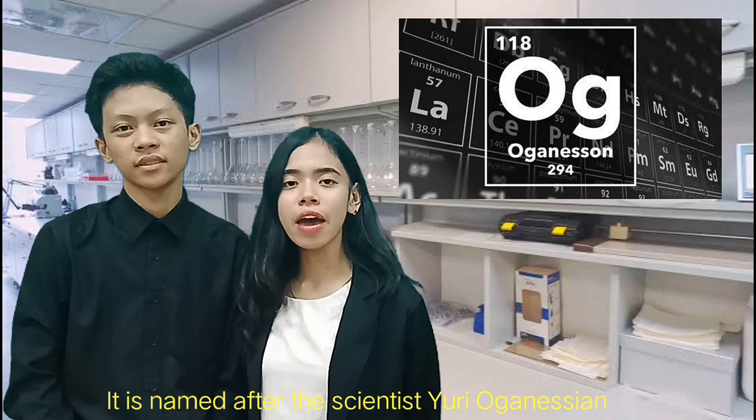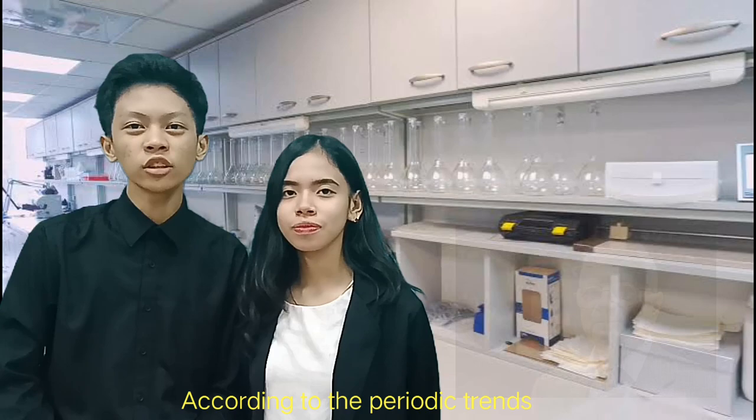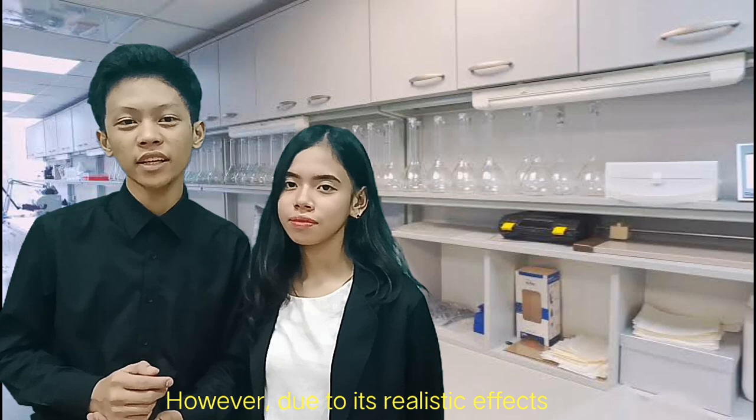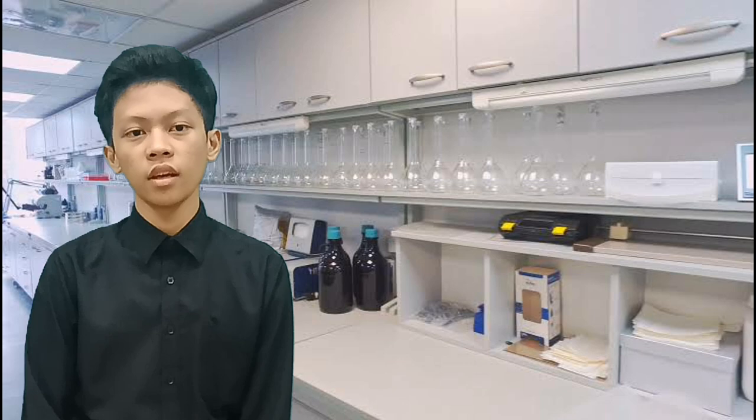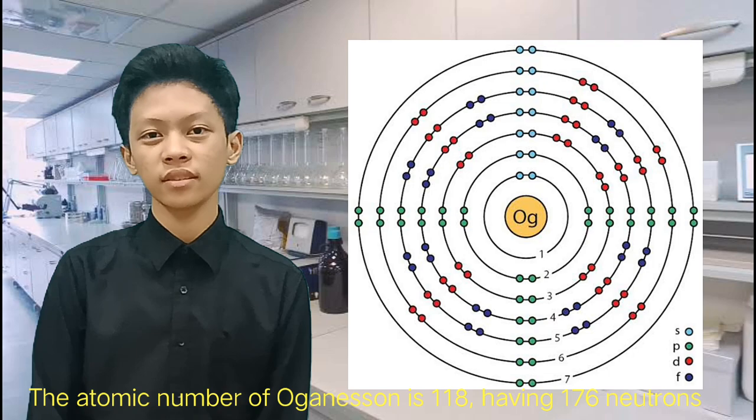And lastly, we have oganesson. It is named after the scientist Yuri Oganessian, and it has a chemical symbol Og. According to the periodic trends, oganesson should be a noble gas. However, due to its relativistic effects, oganesson is predicted to be a solid at room temperature. The atomic number of oganesson is 118, having 176 neutrons. And since only a few atoms of oganesson have ever been produced, it currently has no uses outside of basic scientific research.